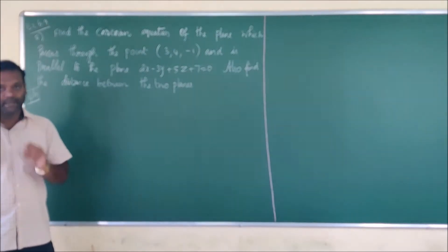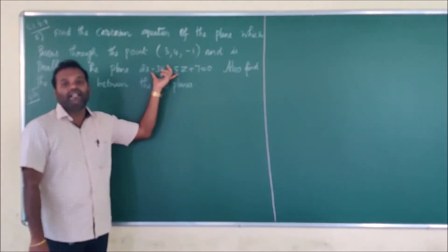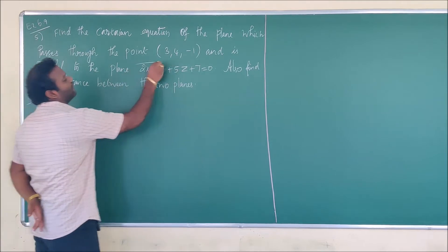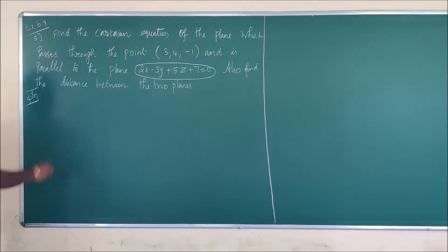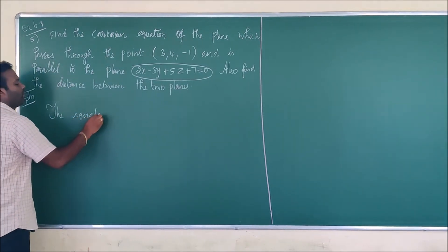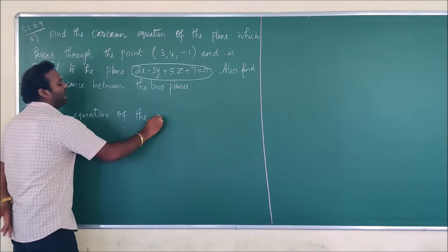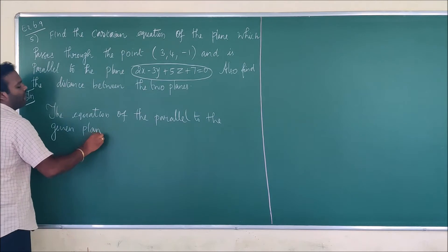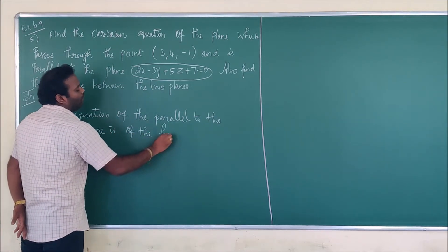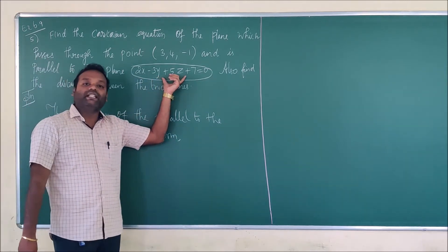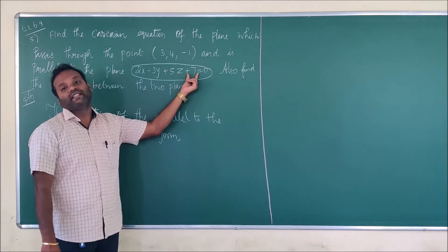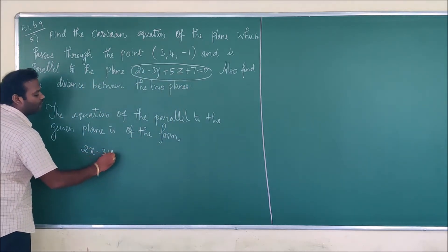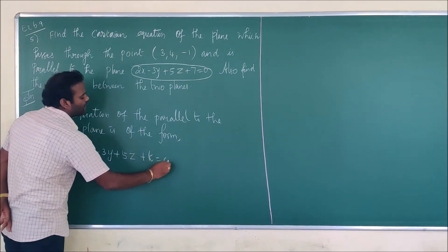We are going to find the distance between the parallel planes, where one equation of the plane is given and the other you have to find. We know that parallel planes differ only by the constant. So what we have to do is replace the constant by k — you should not change the x, y, and z coefficients. The equation of the parallel plane is of the form: 2x minus 3y plus 5z plus k equals 0.